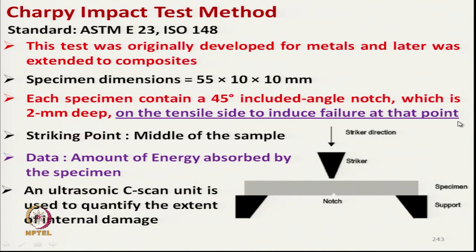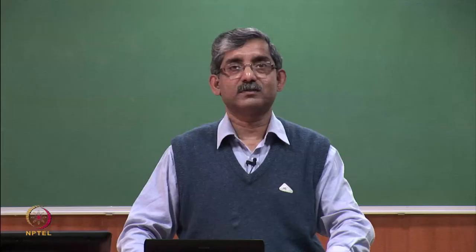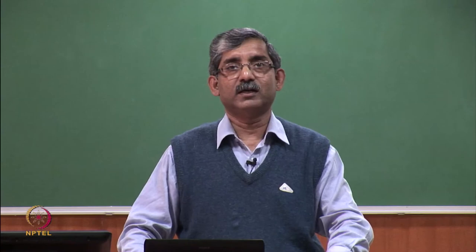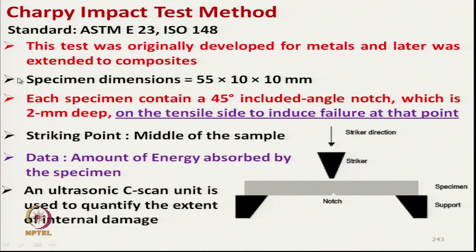The Charpy impact test method follows ASTM E23 or ISO 148, originally developed for metals and later extended to composites. Specimen dimensions are 55 × 10 × 10 mm, with a 45-degree angle notch on the opposite side from the loading/striking point at the middle of the sample. The data measured is the amount of energy absorbed by the specimen.